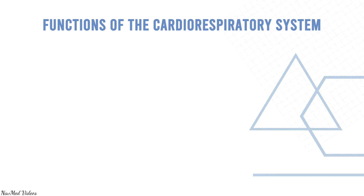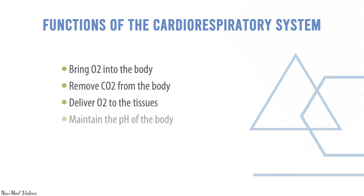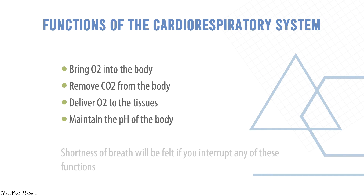What are the functions of the cardiorespiratory system? To bring oxygen into the body, remove carbon dioxide from the body, deliver oxygen to the tissues, and maintain the pH of the body. Shortness of breath will result if any of these functions are interrupted.